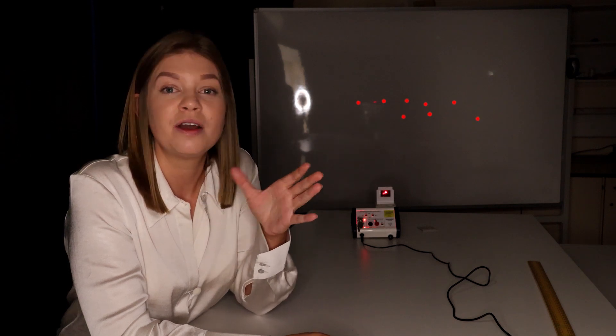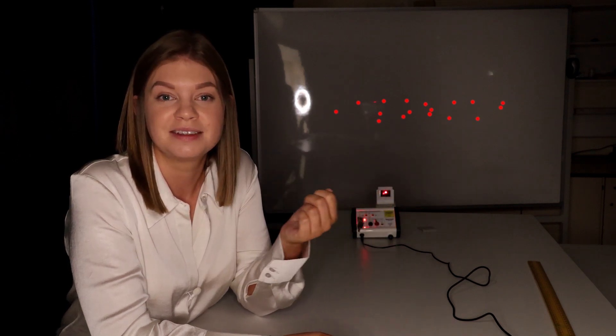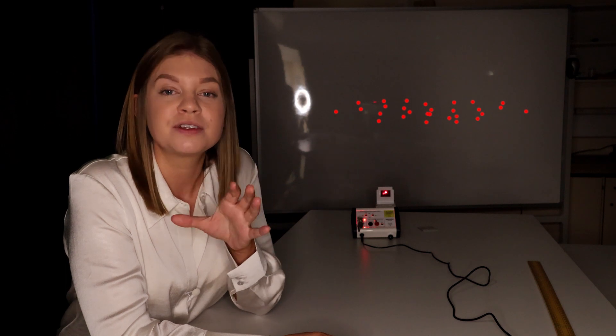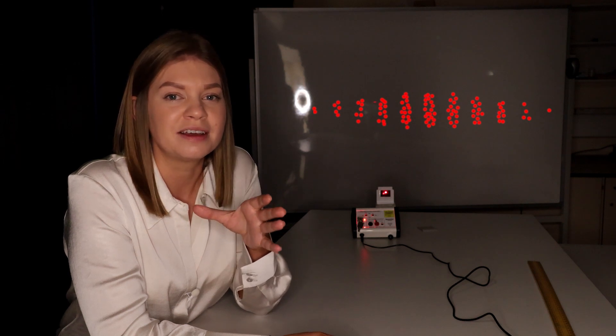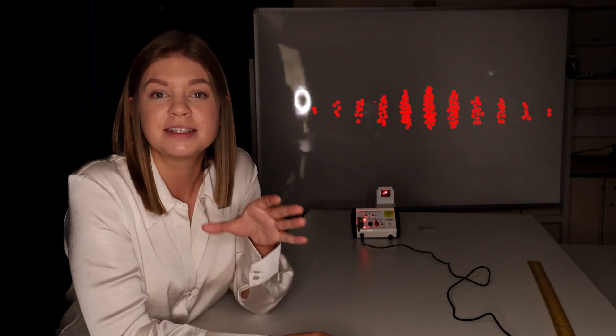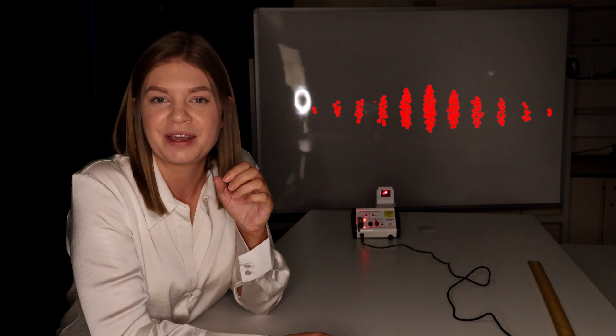It builds up slowly as photons arrive at the screen one by one at random points in the diffraction pattern. In this manner, the photons are detected at the screen as a particle, but we know that the interference pattern can only occur if the photons pass through both slits simultaneously, behaving as a wave.